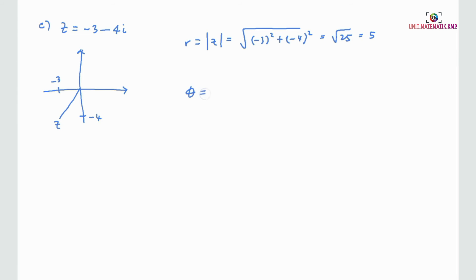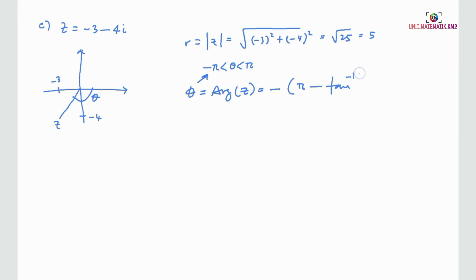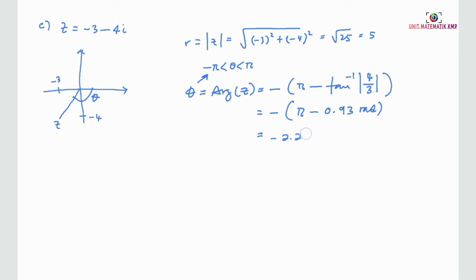For the argument, we look at the Argand diagram and see that Z is in the third quadrant. Since the interval of the argument is from negative pi to pi, the formula for the third quadrant is negative pi minus tangent inverse of 4 over 3. We use the positive value 4 over 3 to obtain an acute angle. Calculating the tangent inverse gives 0.93 radians, and the final answer is negative 2.21 radians.